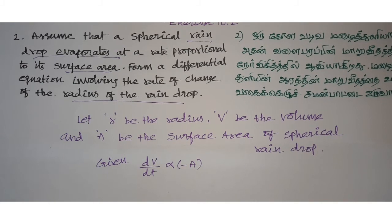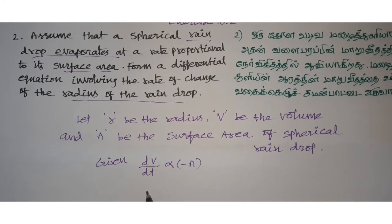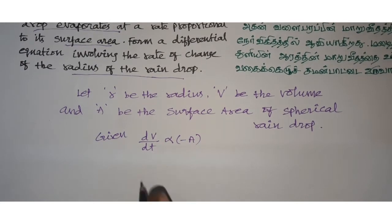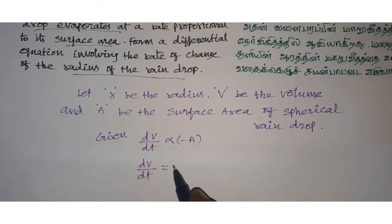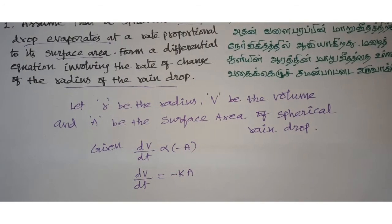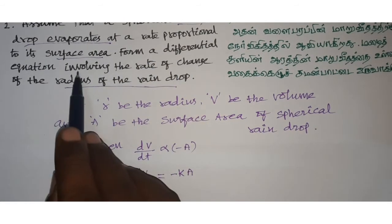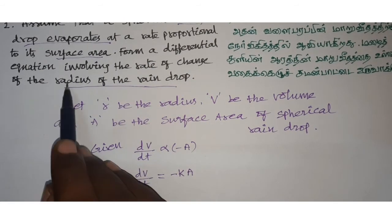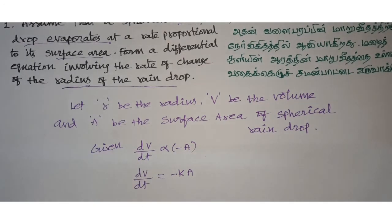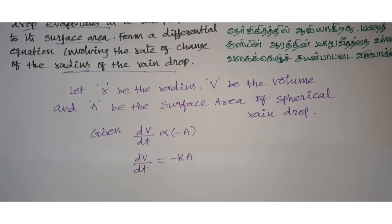So dV/dt equals minus kA, where k is the constant of proportionality. We need to form the differential equation involving the rate of change of radius, so in terms of radius.